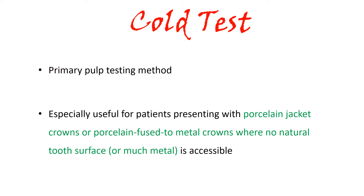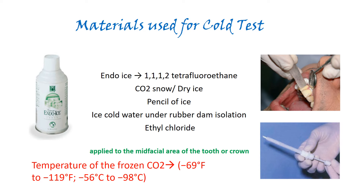The cold test is the primary pulp testing method and is especially useful for patients with porcelain jacket crowns or PFM crowns where no natural tooth surface is accessible. Materials for cold testing include endo ice (1,1,1,2-tetrafluoroethane), carbon dioxide snow or dry ice, a pencil of ice, ice-cold water under rubber dam isolation, and ethyl chloride, all applied to the mid-facial area of the tooth. The temperature of frozen carbon dioxide (dry ice) is -69°F to -119°F (-56°C to -98°C) — commonly asked in exams.